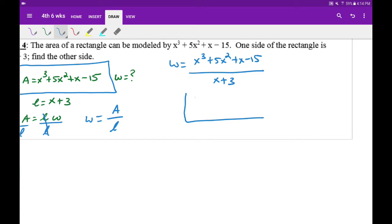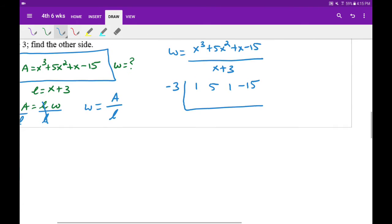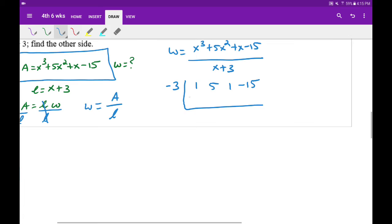Write your coefficients inside: 1, 5, 1 for the x, and negative 15 for the constant. And then our divisor is x plus 3. So I'm going to take the back number, change the sign to a negative 3. So that will be our pivot point for the synthetic division. First number, we bring down to the bottom.